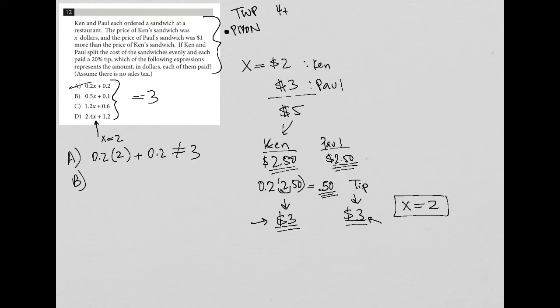For choice B, I have 0.5 times two plus 0.1. 0.5 times two, half of two is one plus 0.1. That is also definitely not equal to three.